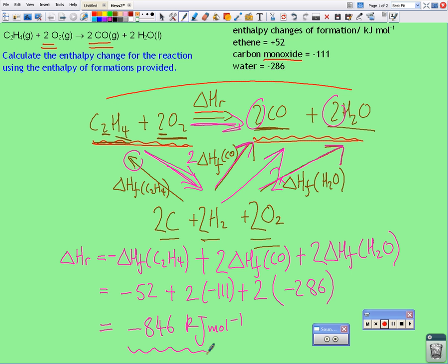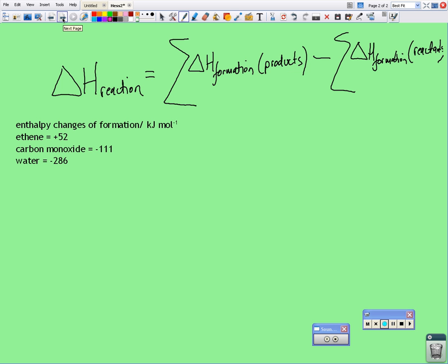Now, if I now use my formula that I've got here, the reaction is C2H4 plus 2 oxygen, giving me two carbon monoxide and two molecules of water. So the enthalpy change of reaction is equal to the sum of the enthalpy change of formation of the products. Well, the products are the carbon monoxide and the water.